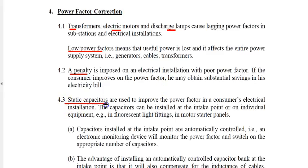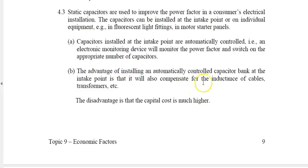To correct power factor, we commonly introduce static capacitors into our electrical system, usually installed at the intake point of the electricity supply or on individual equipment, for example in fluorescent fittings or motor starters. Capacitors installed at the intake are usually automatically controlled, allowing adjustment of the capacitor bank as power factor varies throughout the day. The good thing about installing automatically controlled capacitor banks is they allow us to compensate for inductances in cables and transformers.